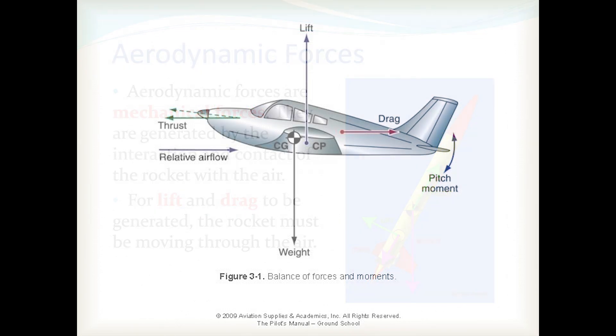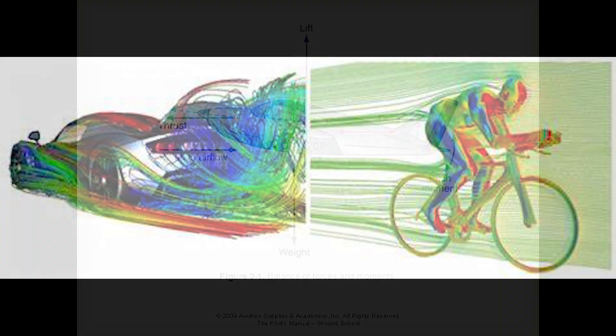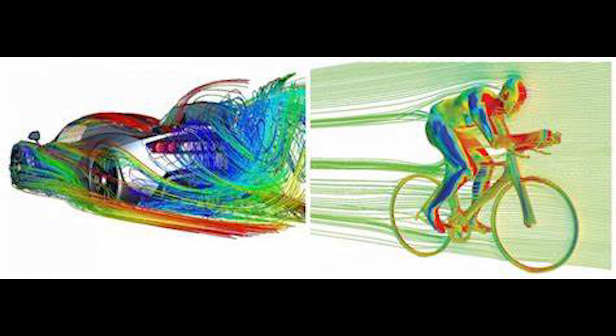Minimizing drag is crucial for improving the efficiency and performance of an aircraft or vehicle. Thrust is the force that propels an object forward. It is generated by engines or propulsion systems, such as jet engines, propellers, or motors. Thrust must overcome drag to enable the object to accelerate and maintain speed. In aviation, engines create thrust by expelling air or exhaust gases backward, following Newton's third law of motion, which produces a forward-moving force.